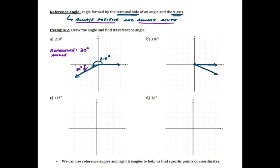For part B, my terminal side should be in quadrant 4. All the way around the circle is 360, and 330 is almost all the way to 360 but not quite — the terminal side is actually 30 degrees away from my initial side. So my reference angle in this case is also 30 degrees. There are many different angles that have the same reference angle — A and B here both have a reference angle of 30 degrees even though the original angles are different.